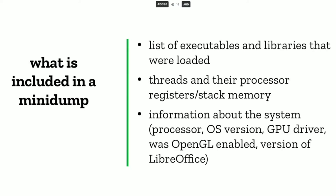Looking at what is actually included in the mini dump: it's a snapshot of the state that includes the loaded files, libraries, and executables, all threads and the state of processor registers and stack memory at the point of the crash. It also includes metadata like the processor used, the operating system and version. Specifically for LibreOffice, we include the version of LibreOffice itself, whether OpenGL was enabled, and what the graphics card driver was and its version.